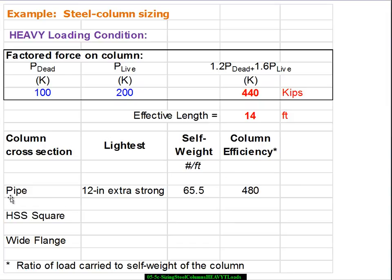So we got to record that here. For pipe we put 12 inch extra strong, 65.5 pounds per foot. And when we take 440,000 pounds and we divide that by 14 times 65.5 we get 480.